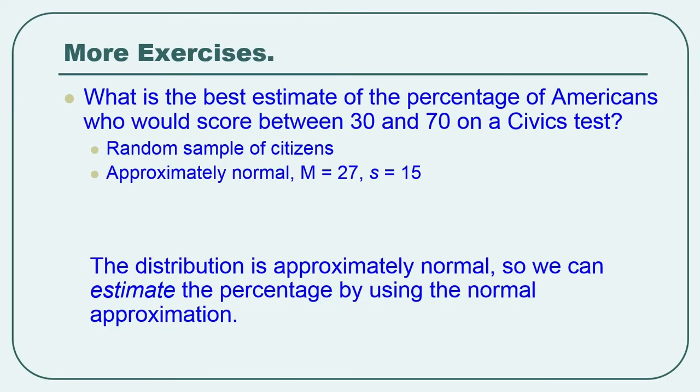So here's another one, pause as necessary so you can work this out yourself. What's the best estimate of the percentage of Americans who would score between 30 and 70 on a civics test? So you take a random sample of citizens. This one's gonna be harder, because it's between two values, not above one value or below one value. Actually, it is above one and below one, but it's a little tricky to work out. But when you see how you do it, that part of it's not terribly complicated.